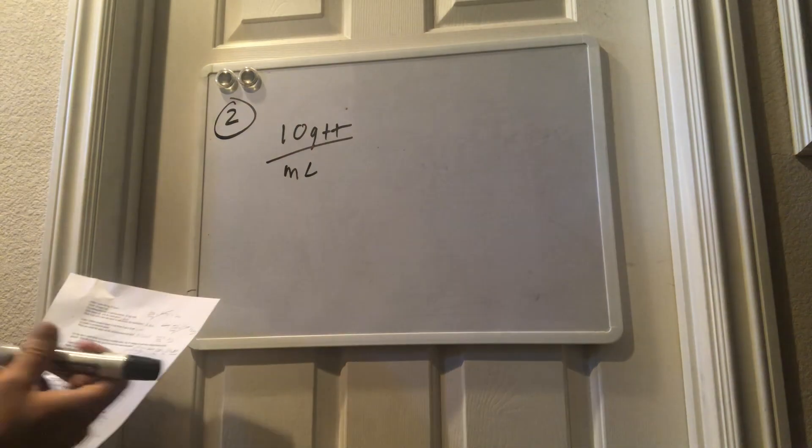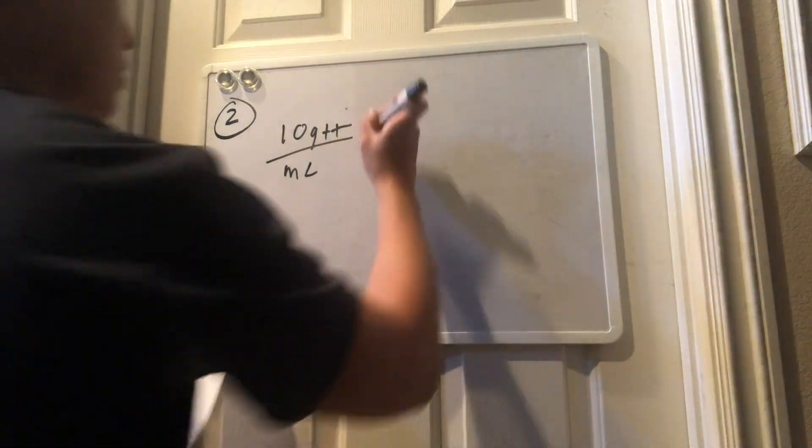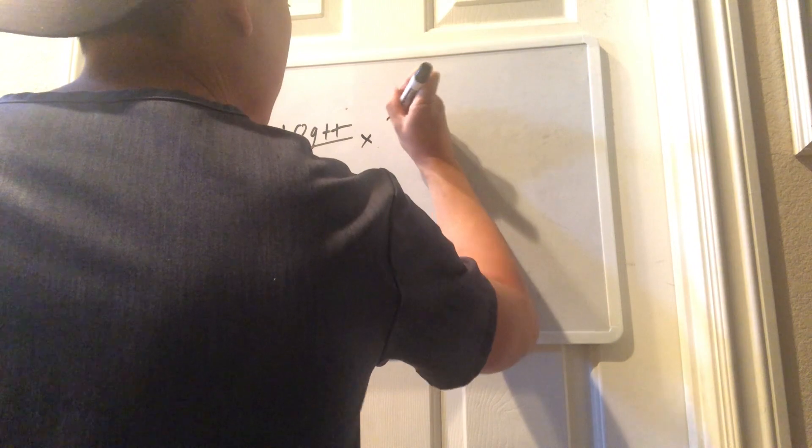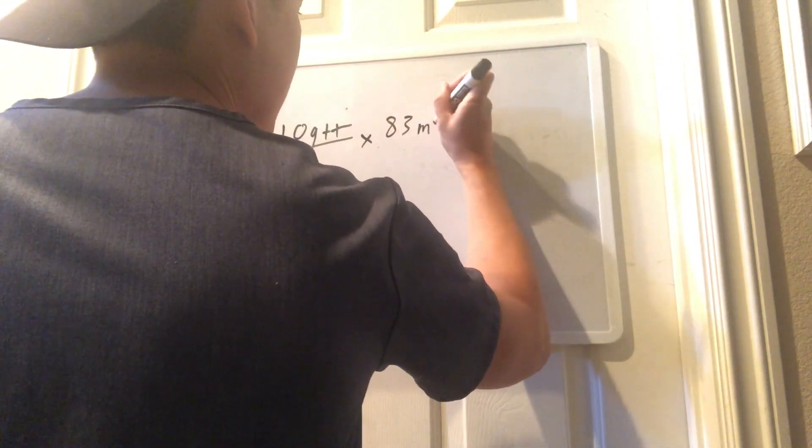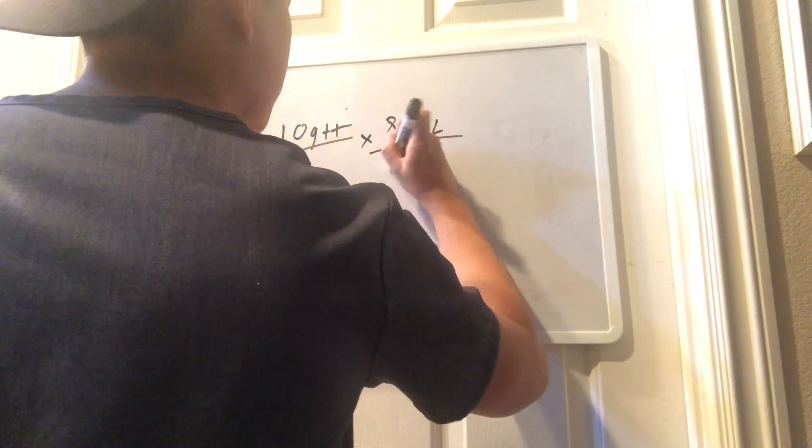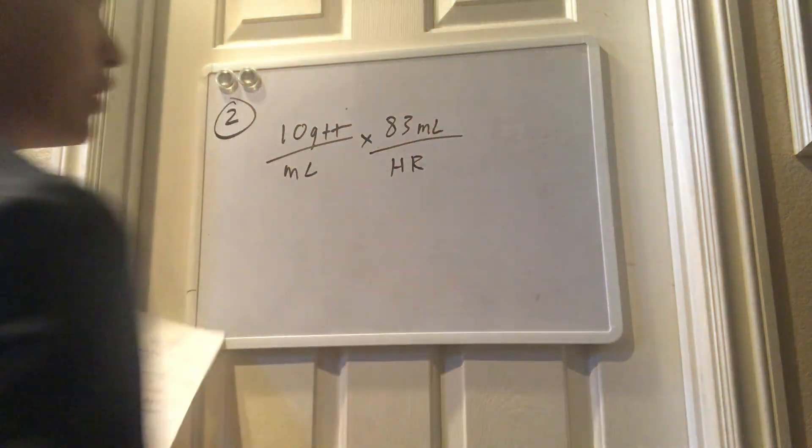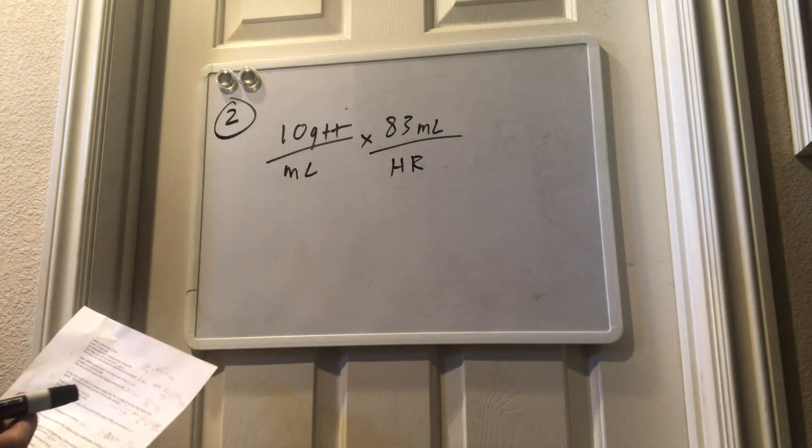And what we want is drops per minute. So, we already know from the first part of the question, the infusion rate is 83 cc's an hour or mL. And then from the hour, we know that 1 hour is equivalent to 60 minutes.